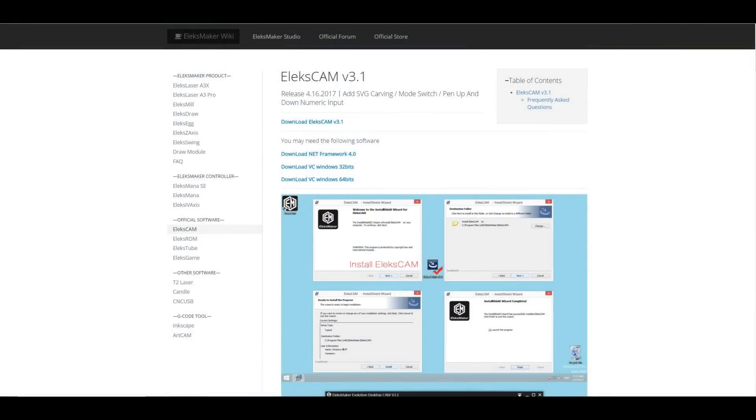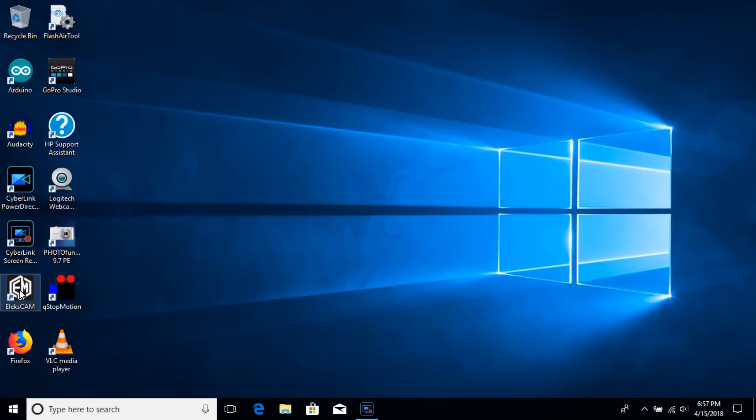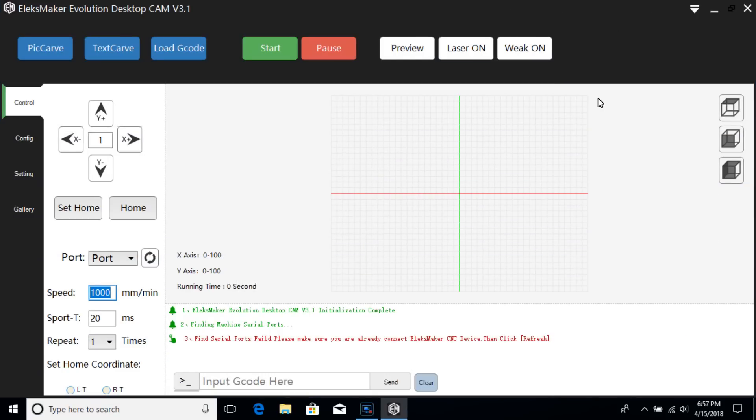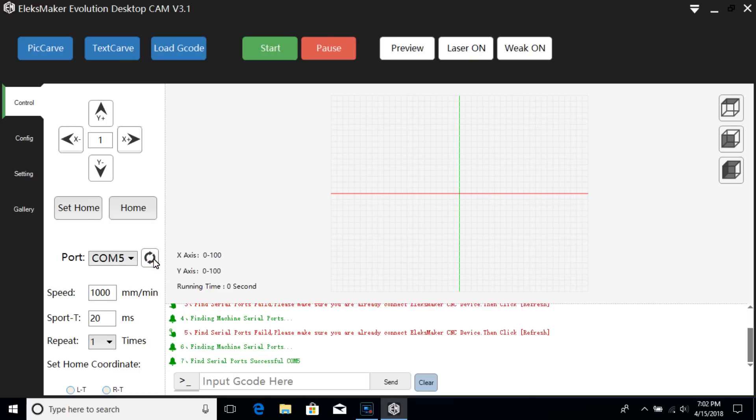The software for the engraver is called Elixcam and it's downloaded from the Elixmaker website. And you also need to install a CH340 driver which you can find from this menu on the Elixcam software. Next the USB cable is plugged in and the COM port selected by clicking this button.